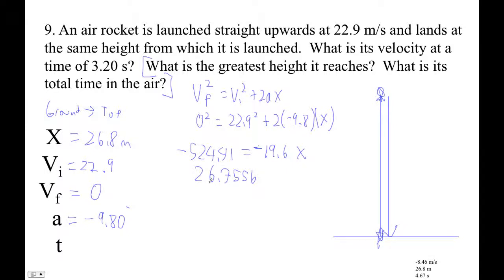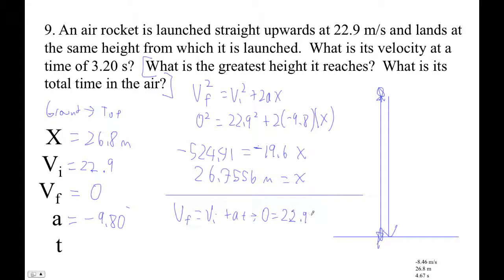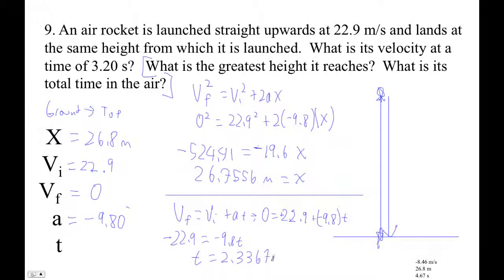So 26.8 meters is our greatest height. Now to find the time to the top, I'll use vf = vi + at: zero equals 22.9 plus negative 9.8 times t. Rearranging: negative 22.9 equals negative 9.8 times t. Dividing both sides by negative 9.8 gives t equals 22.9 divided by 9.8, which is 2.3367 seconds.